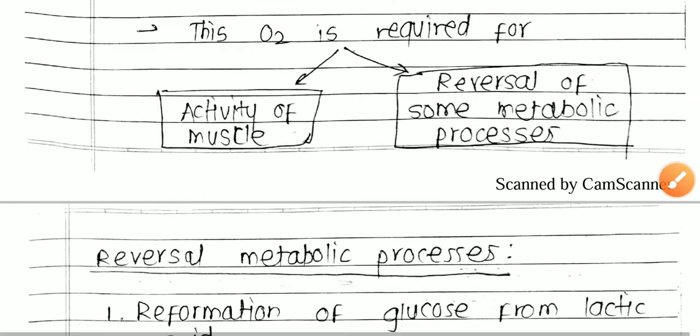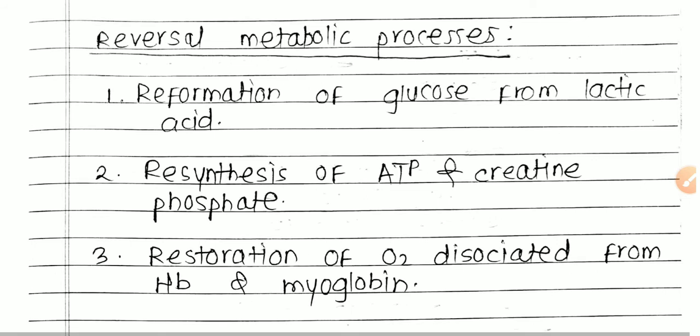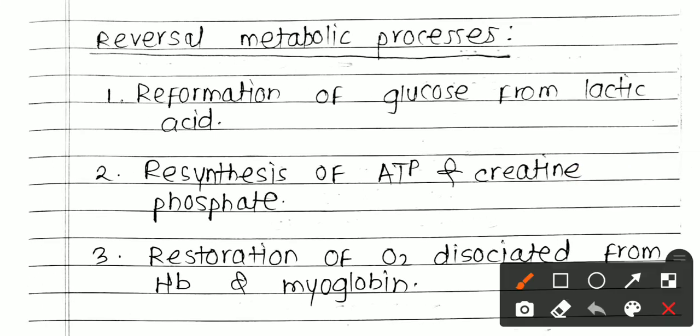Which metabolic processes do we have to reverse? Firstly, reformation of glucose from lactic acid. Your muscle enters into the lactic acid pathway or anaerobic respiration. You have to reform glucose from lactic acid, and for this, extra oxygen is required.